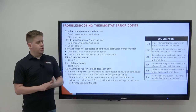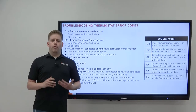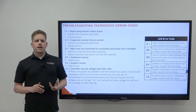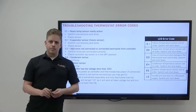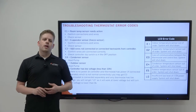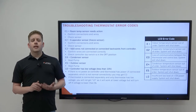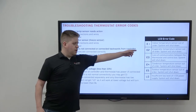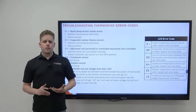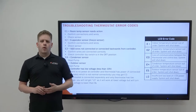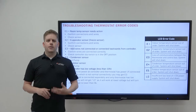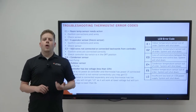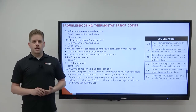E2 means your evaporator sensor or freeze sensor has become an open circuit — that's the sensor pressed into the coils. If that sensor becomes an open circuit, it is replaceable on its own. Either the connection has become loose or that sensor has gone bad.